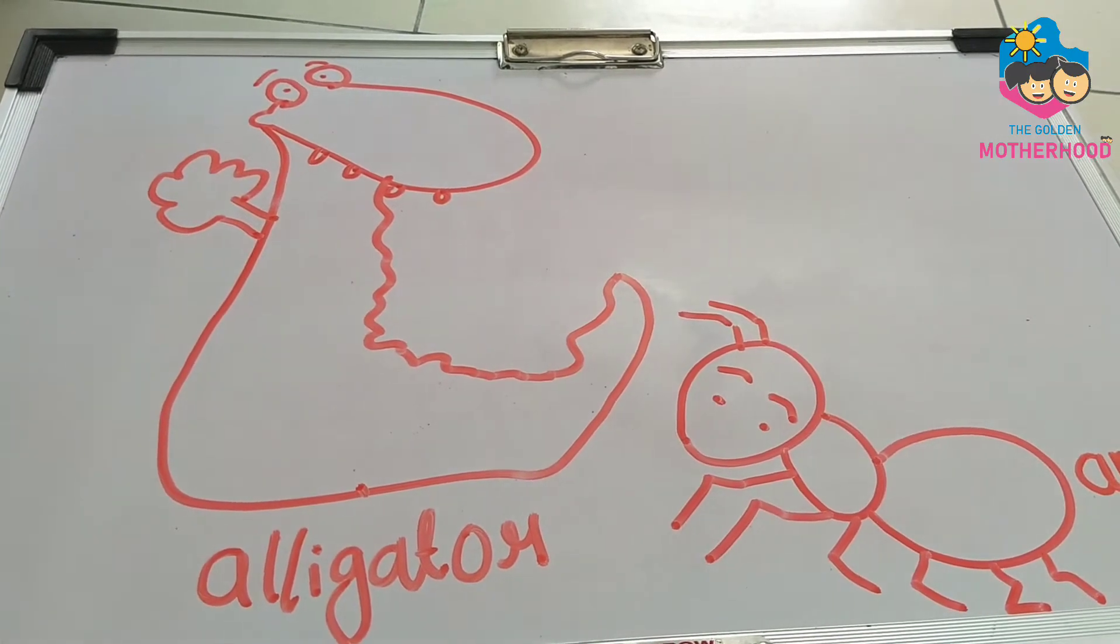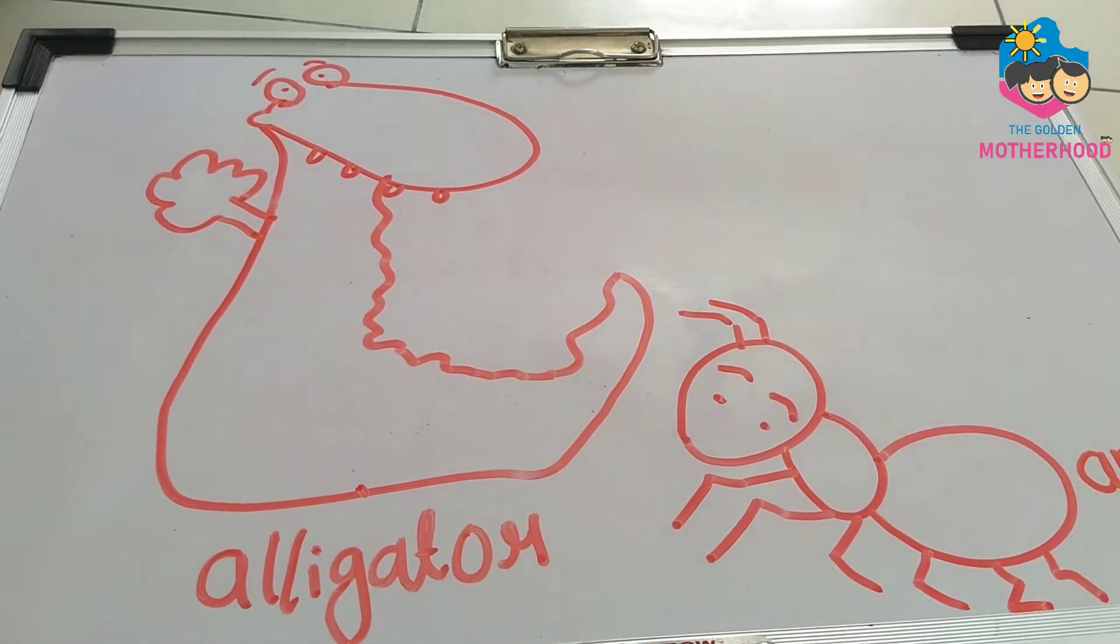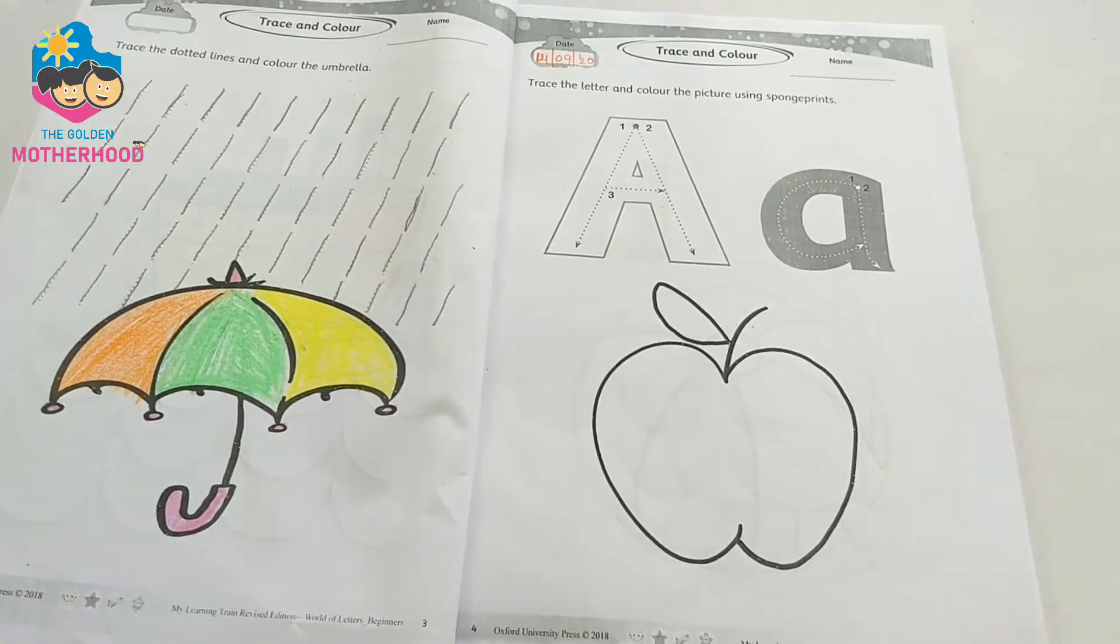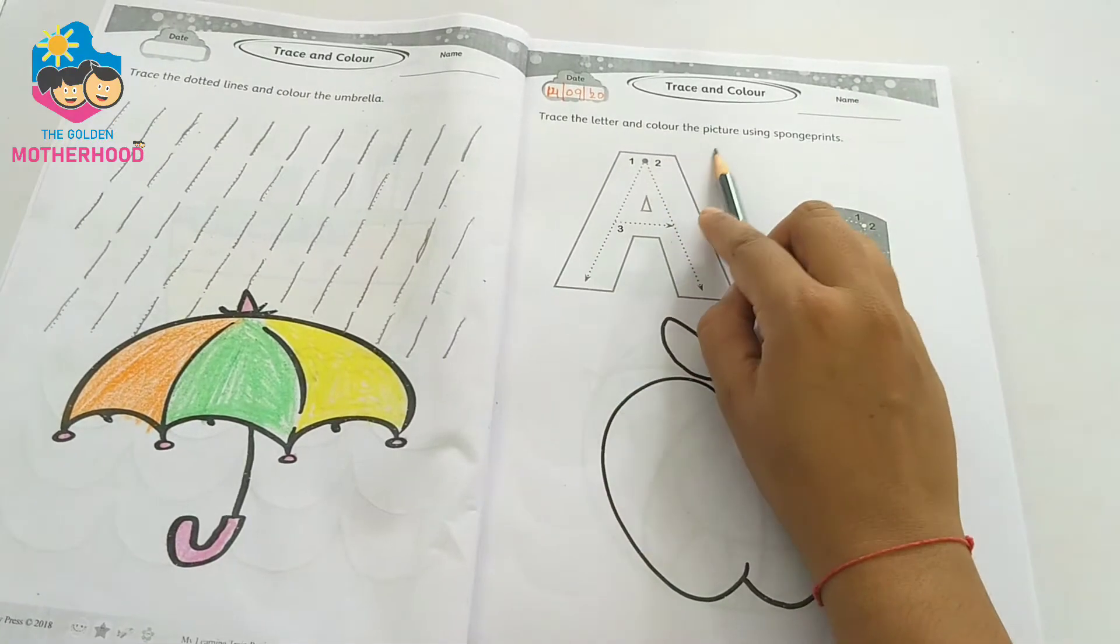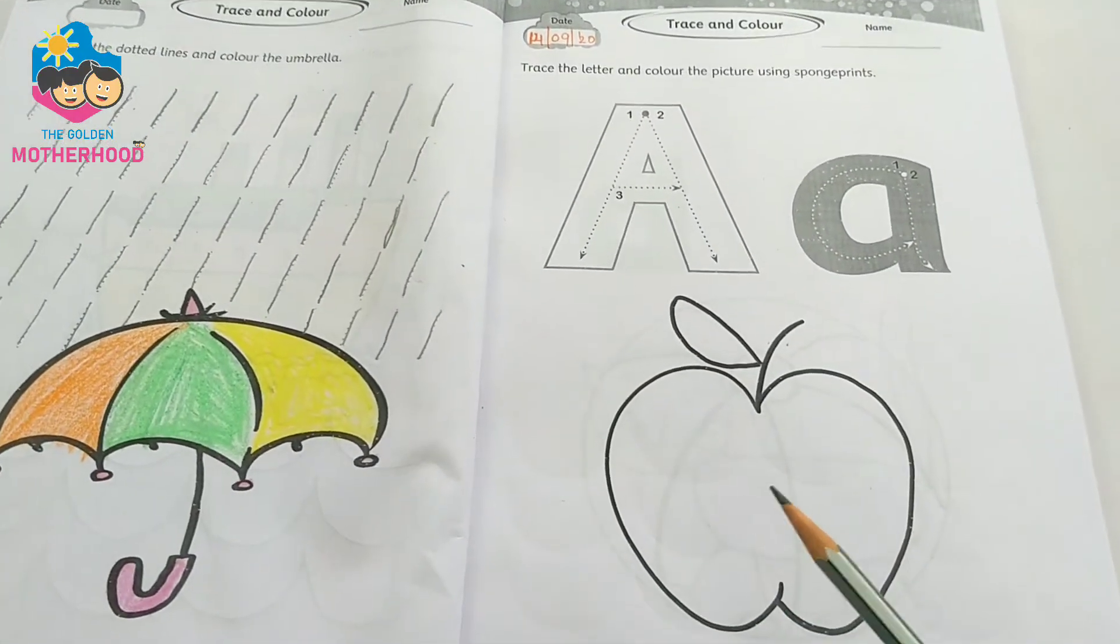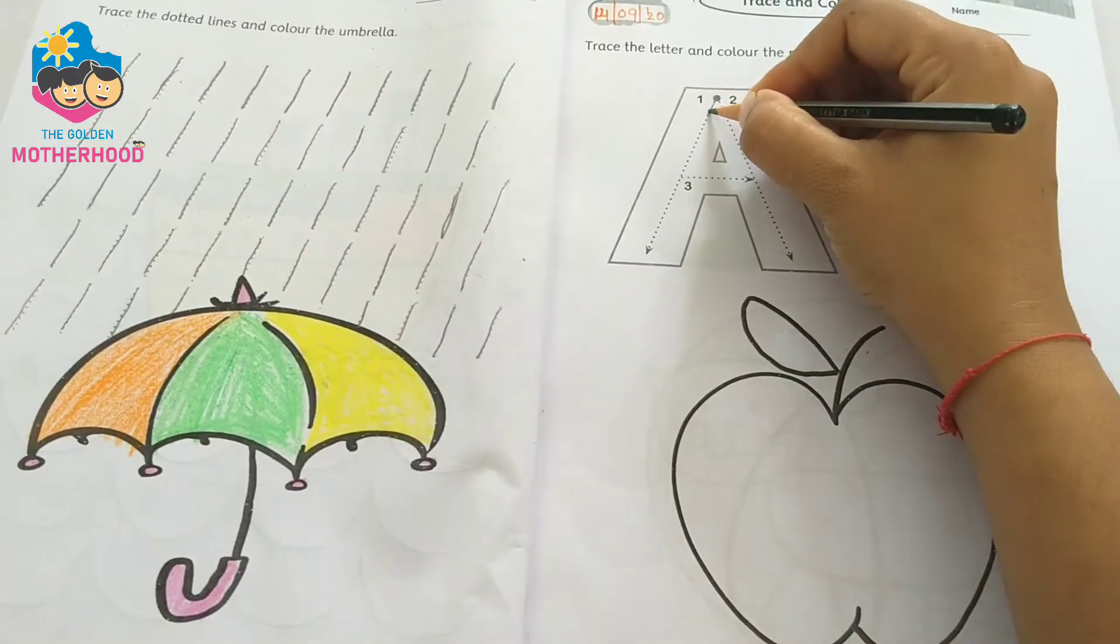You can teach your child for sharing. Now, go to page number 4. Trace the letter and color the picture using sponge print. Trace the letter A.